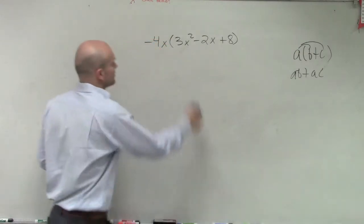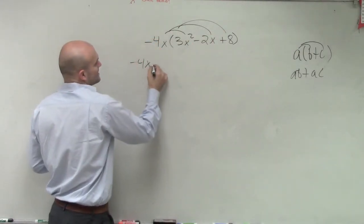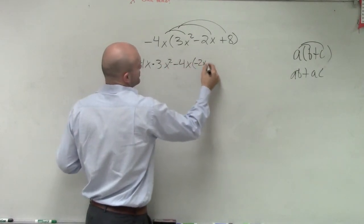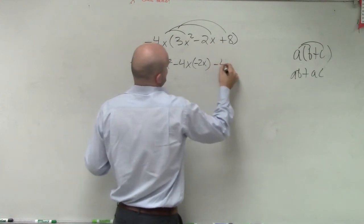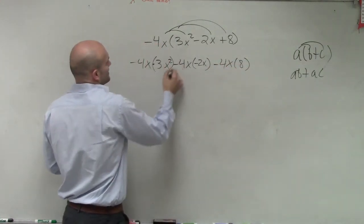So therefore, I need to do negative 4x times 3x squared minus 4x times negative 2x minus 4x times 8. I mean, I'll write it like that as well.